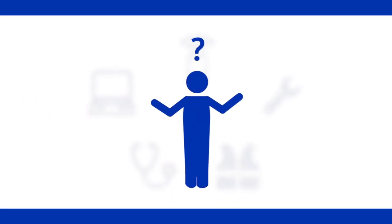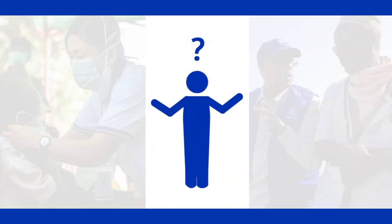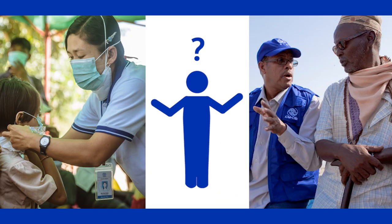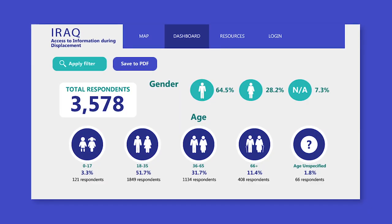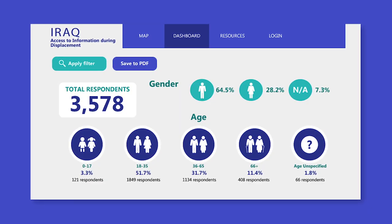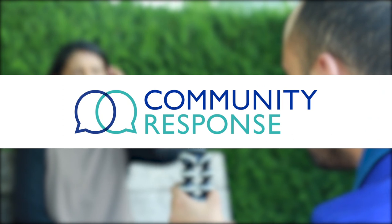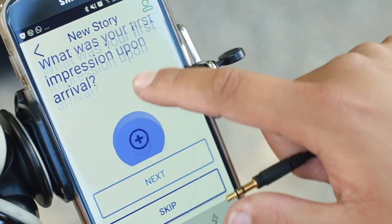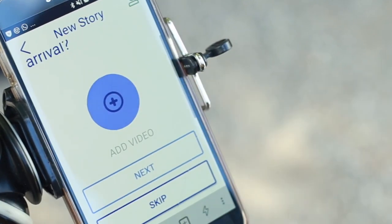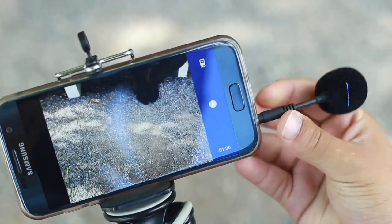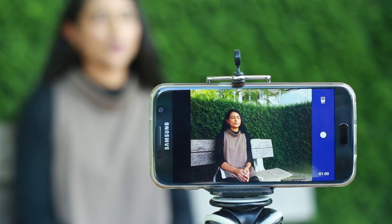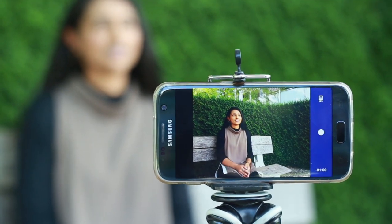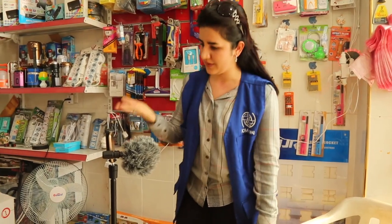But how do you showcase the outcomes of your work? How can you demonstrate your project's impact and pinpoint potential areas for improvement? This is where Community Response comes in. Community Response is a digital platform that helps your project staff record interviews with beneficiaries directly impacted by IOM's work.